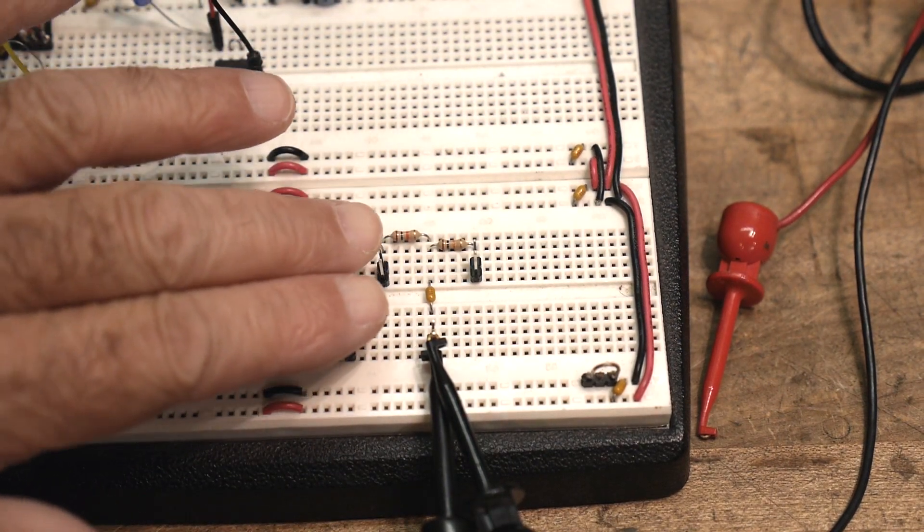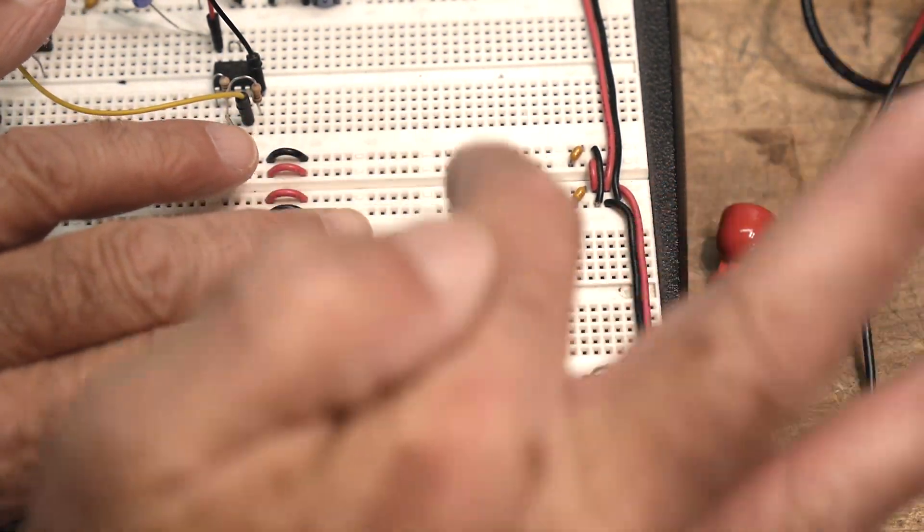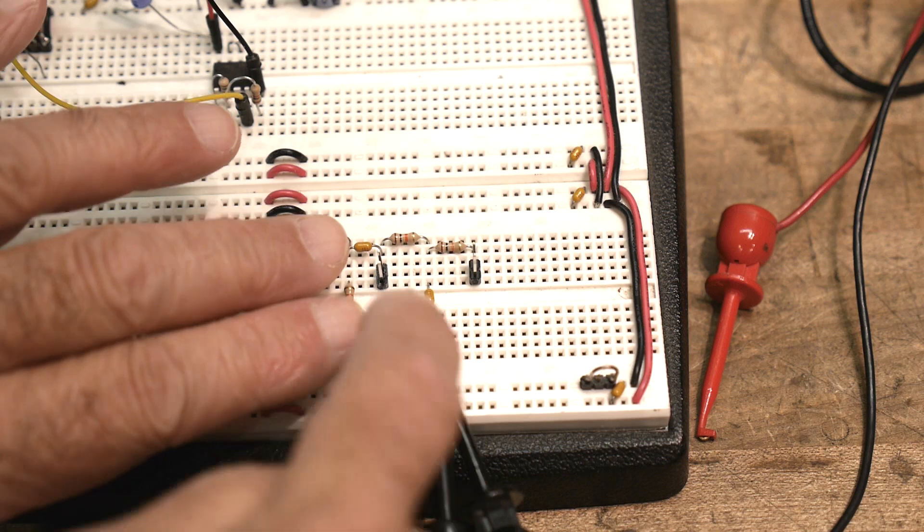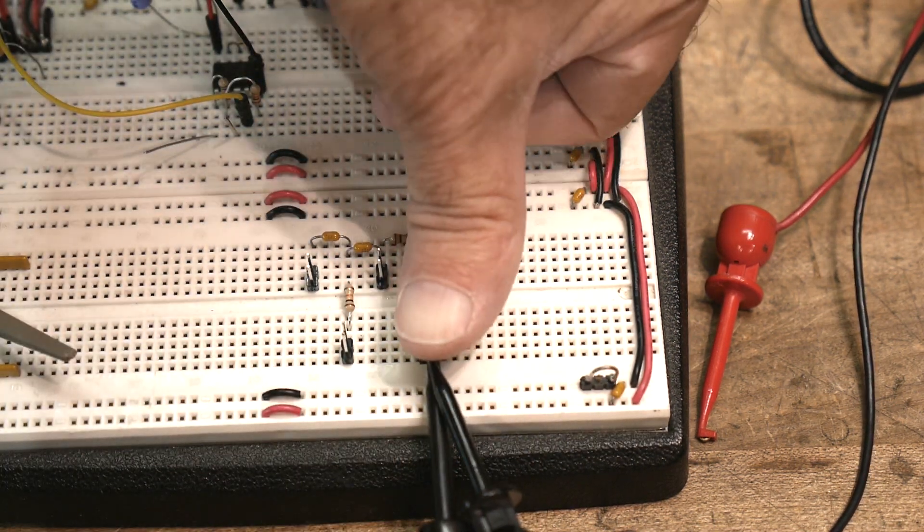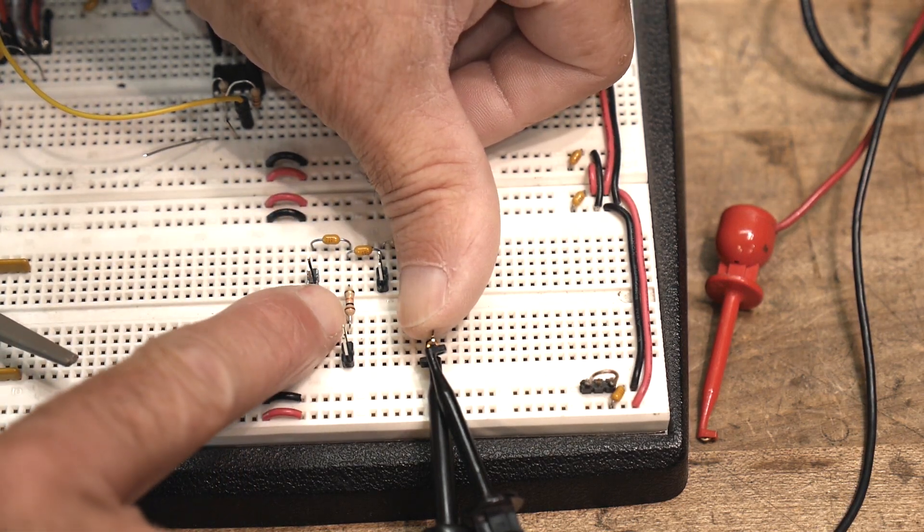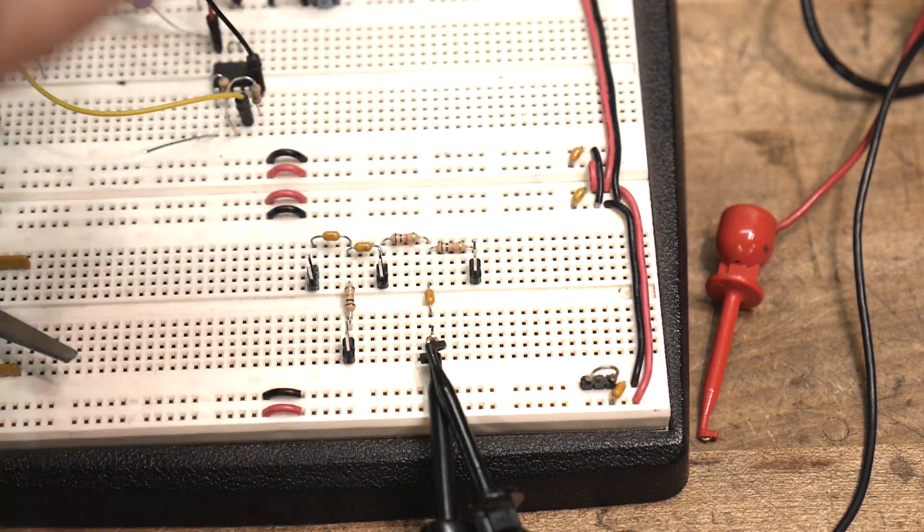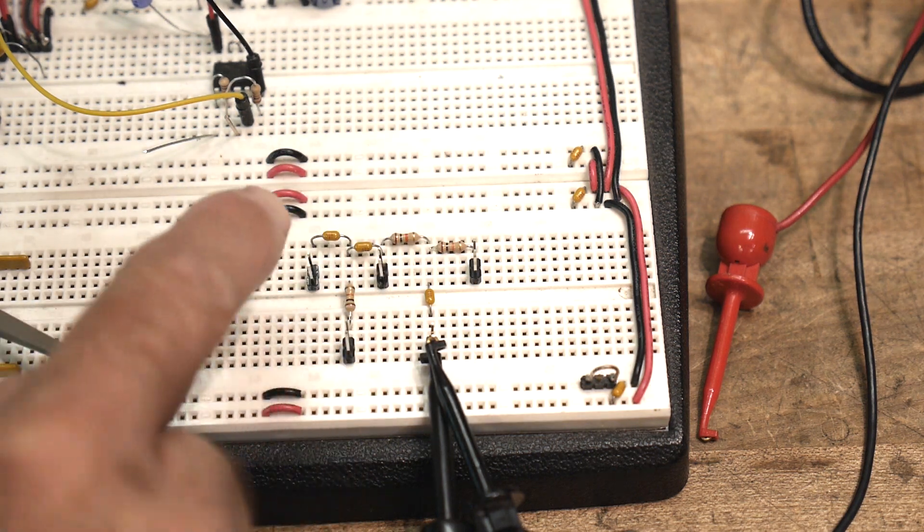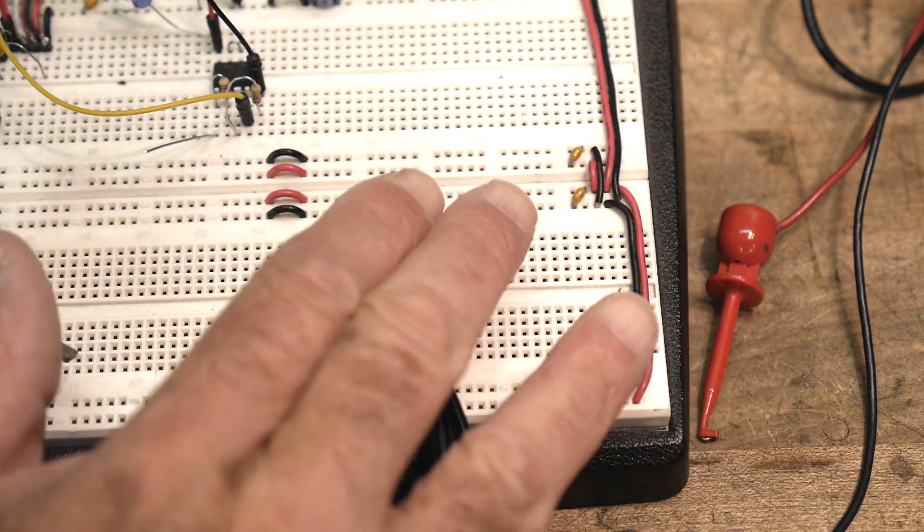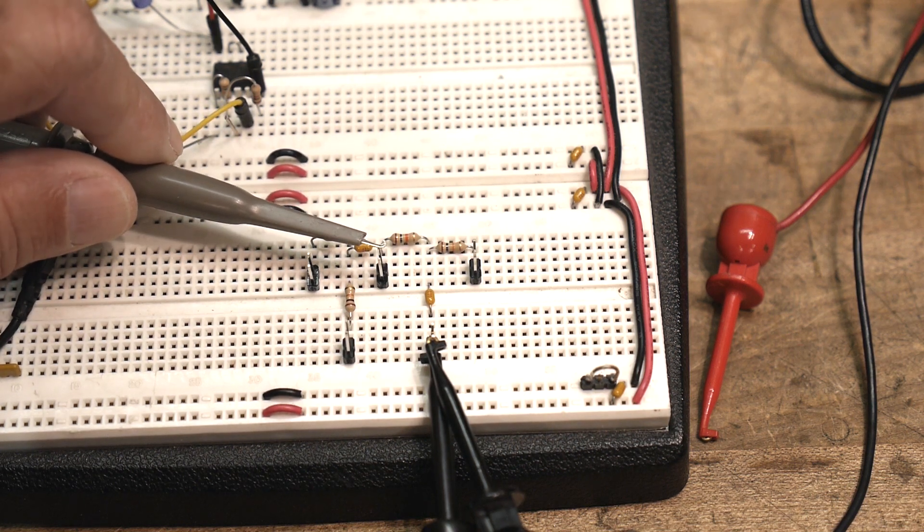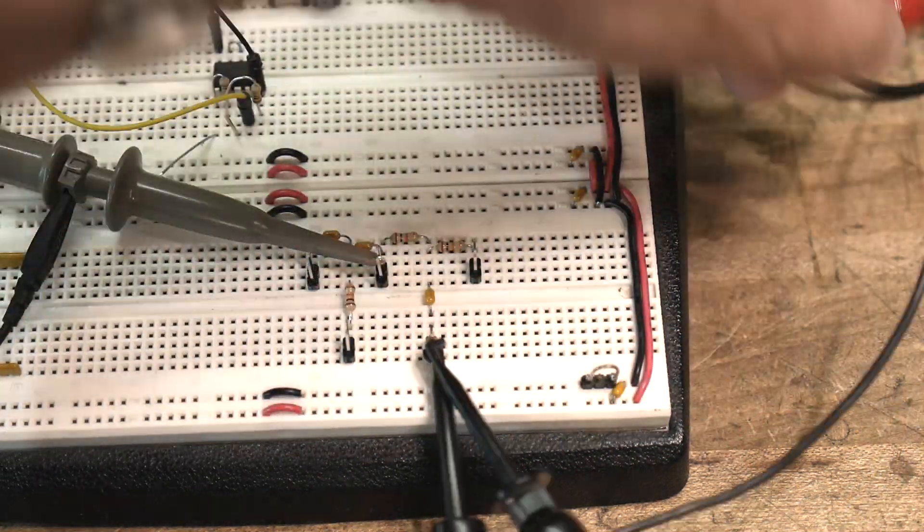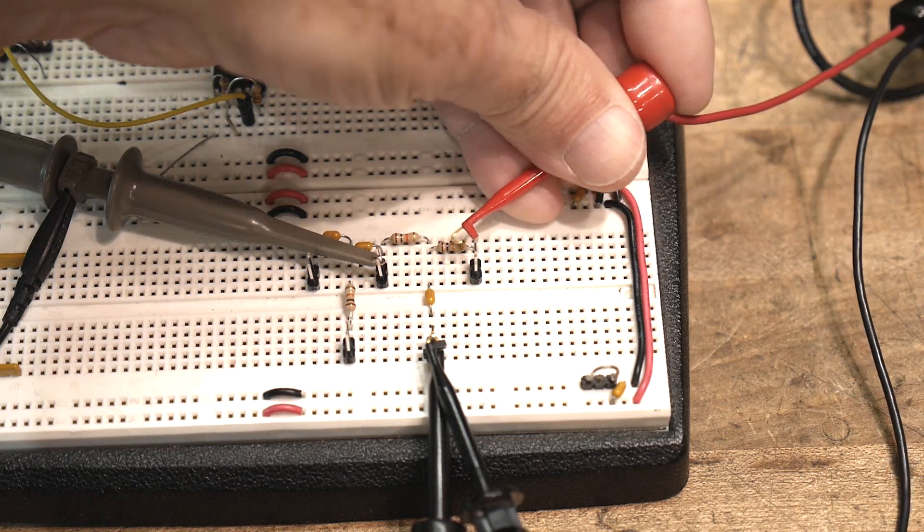So this is the resistor-resistor-capacitor with inputs and ground. And then over here I have a capacitor-capacitor-resistor to ground. So they're both here. So they're both T's. Here's a T and here's a T. So we'll look at this one first.